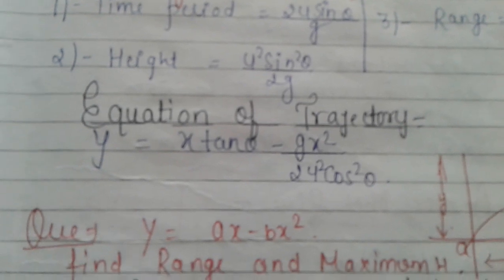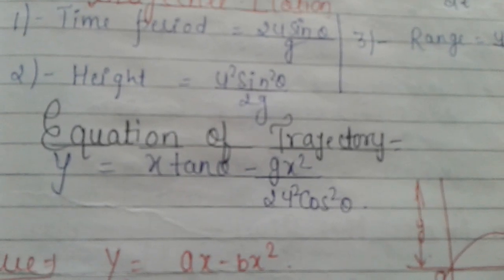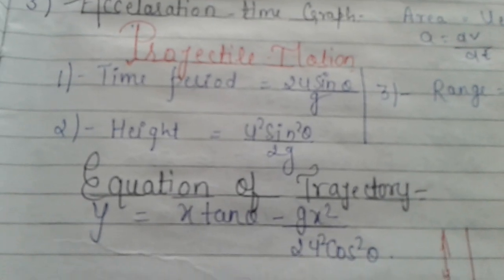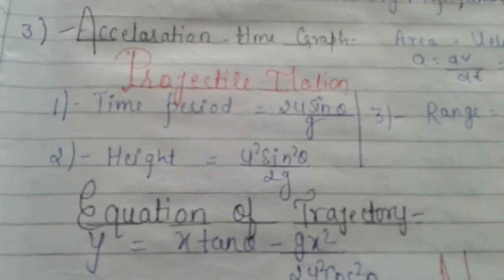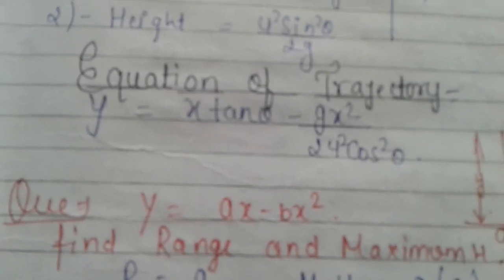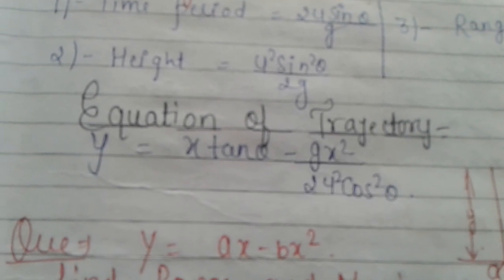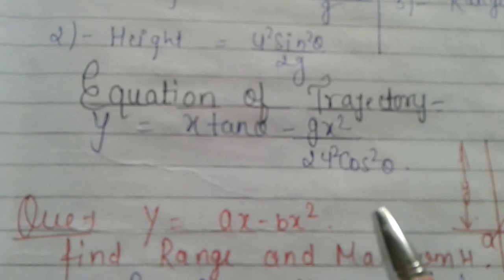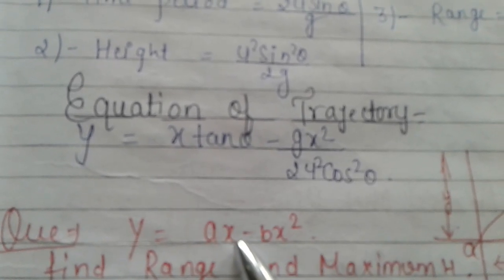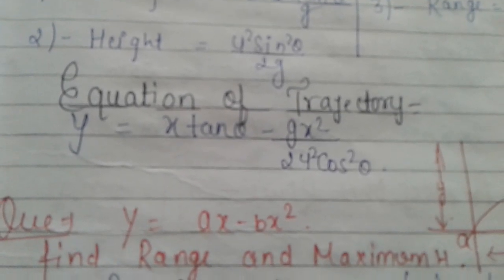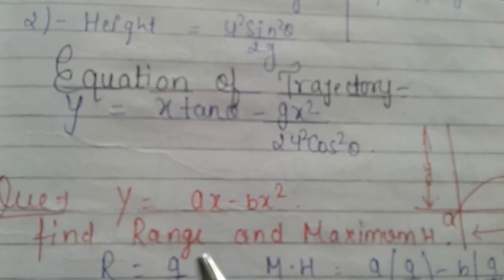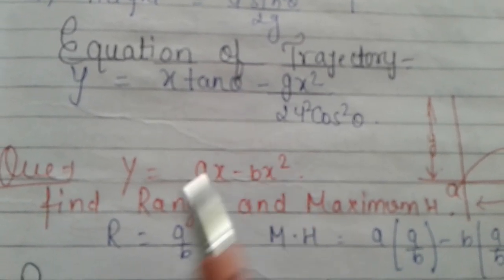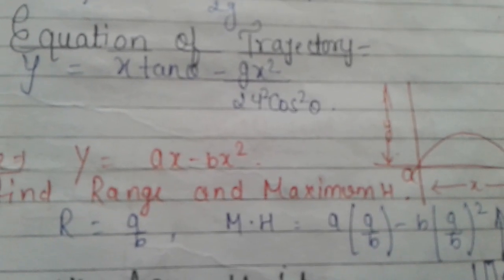An important formula to learn is the equation of trajectory: y = Ax − Bx². If a question gives you this equation and asks you to find range and maximum height, you use this trajectory equation. To find the range, which is the horizontal distance, set y = 0 and solve for x. To find maximum height, find the maximum value of y.